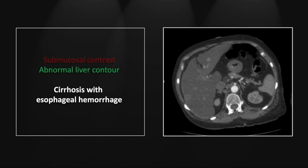In the abdomen, you can appreciate the abnormal liver contour consistent with cirrhosis, and you can see enlargement and recanalization of the umbilical vein.